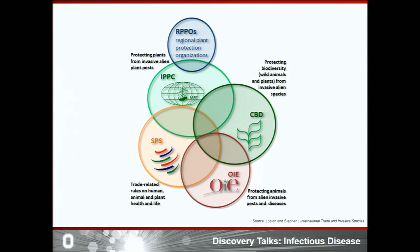That is why many global organizations have tried to regulate the global plant trade to reduce incentives for countries to be the weakest link and rely on neighbors' invasive species management programs. The WTO has trade-related rules on human, animal, and plant health and life; the Convention on Biological Diversity has developed programs to protect biodiversity from invasive alien species; and the International Plant Protection Convention aims at protecting plants from invasive alien pests.